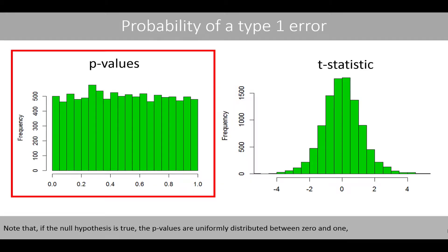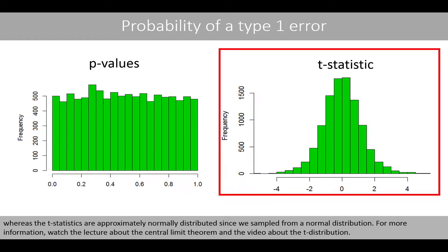Note that if the null hypothesis is true, the p-values are uniformly distributed between 0 and 1, whereas the t-statistics are approximately normally distributed since we sampled from a normal distribution. For more information, watch the lecture about the central limit theorem and the video about the t-distribution.